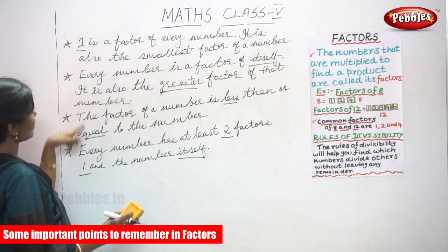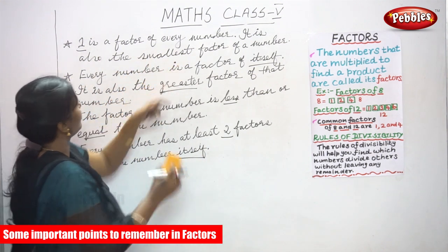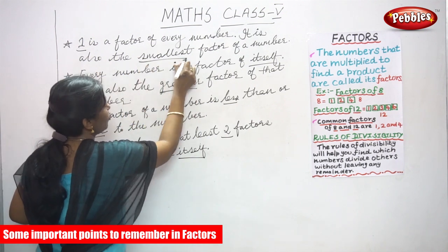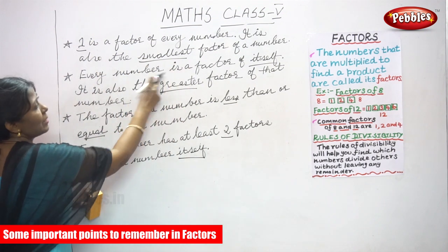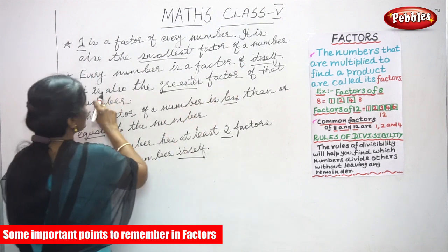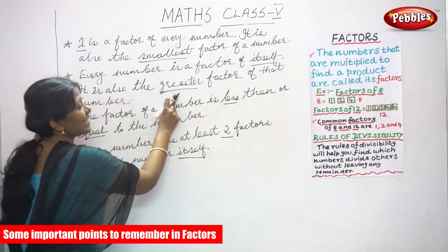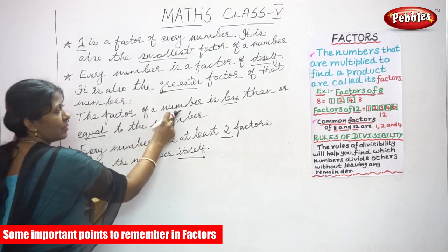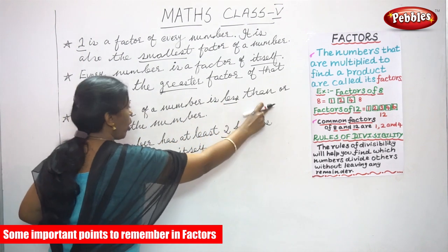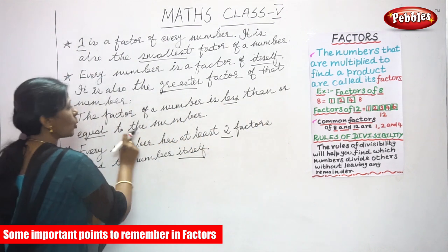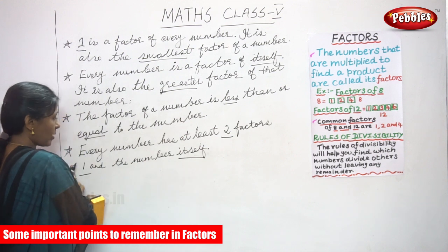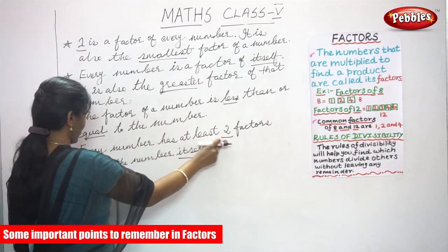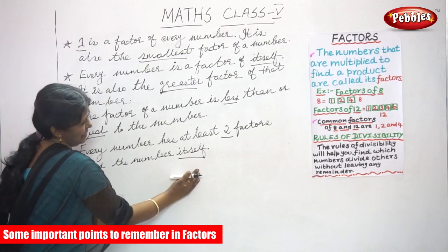To recap all the points to remember: First, one is a factor of every number and it is also the smallest factor. Second, every number is a factor of itself and it is also the greatest factor of that number. Third, the factor of a number is less than or equal to the number. Fourth, every number has at least two factors — one and the number itself.